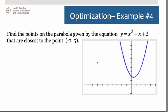If we're trying to find the points on this parabola that are closest to that point over there in the second quadrant, really what we're trying to minimize is a distance. And hopefully when you think of distance in geometry, what comes to mind is the distance formula.